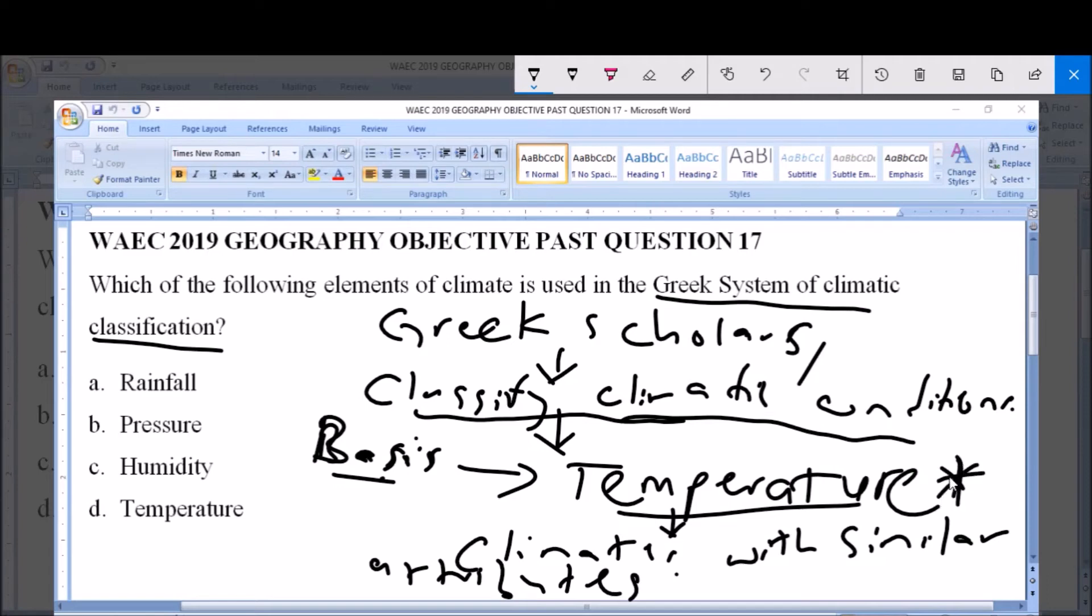So, temperature was the basis they used in their classification. And temperature is option D, which is the answer to this question.